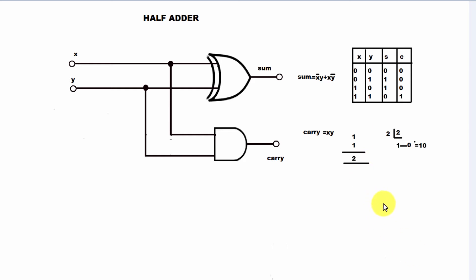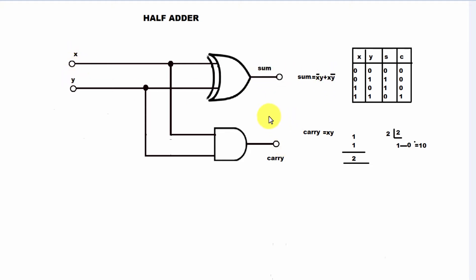Good morning friends. We have a daily program for the half adder. Let's check the half adder — there are x and y inputs, and sum and carry as two outputs. I will write the truth table now.